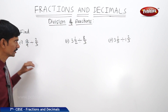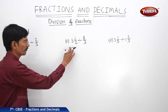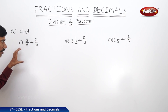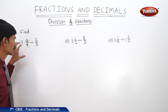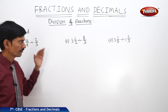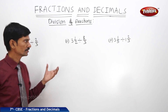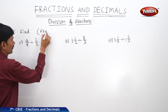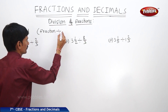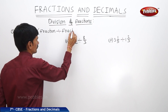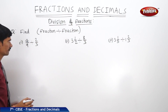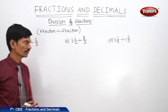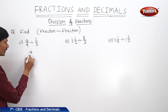Now let us solve the next question. Find 4/9 divided by 2/3, 3½ divided by 8/3, and 3⅕ divided by 1⅔. In each case a fraction is divided by another fraction. For 4/9 divided by 2/3, to divide a fraction by another fraction, we multiply 4/9 by the reciprocal of 2/3.